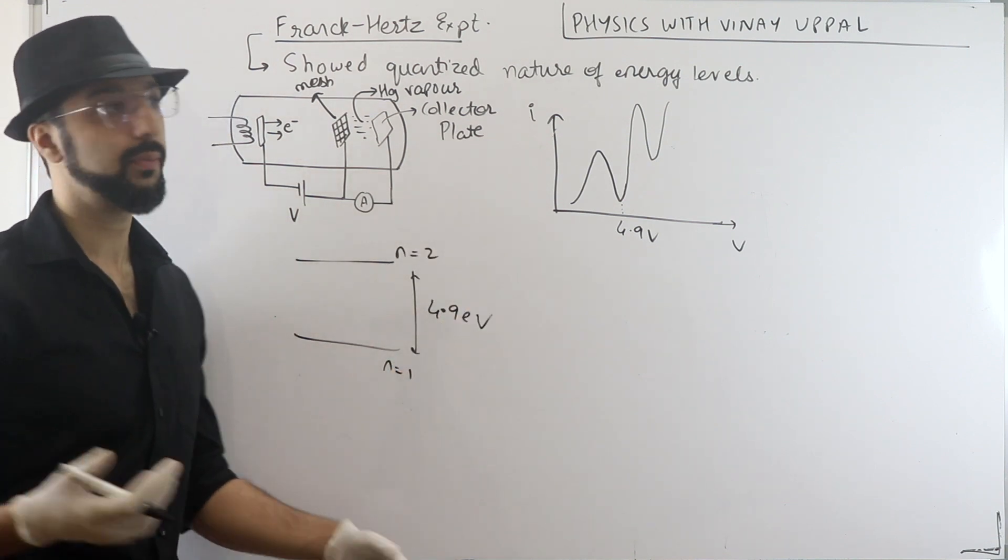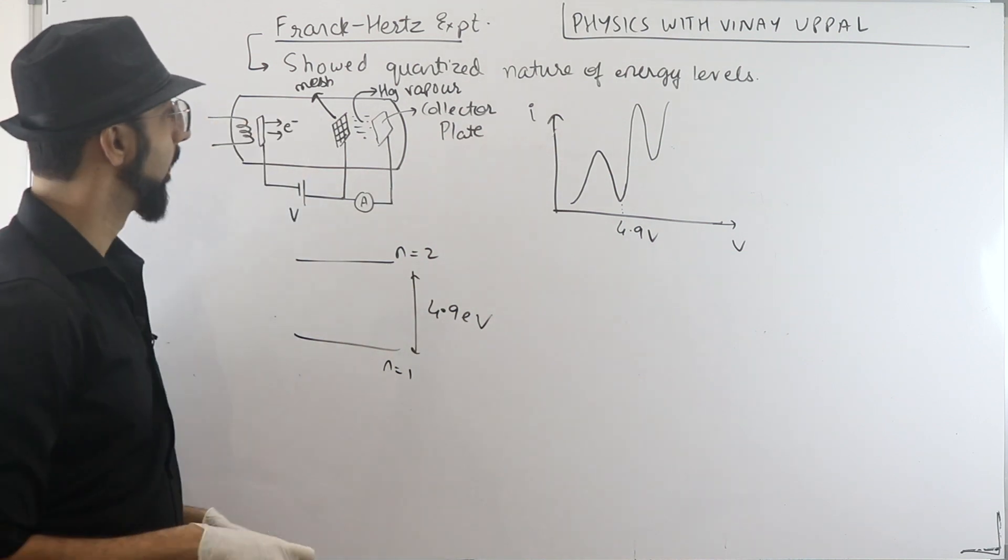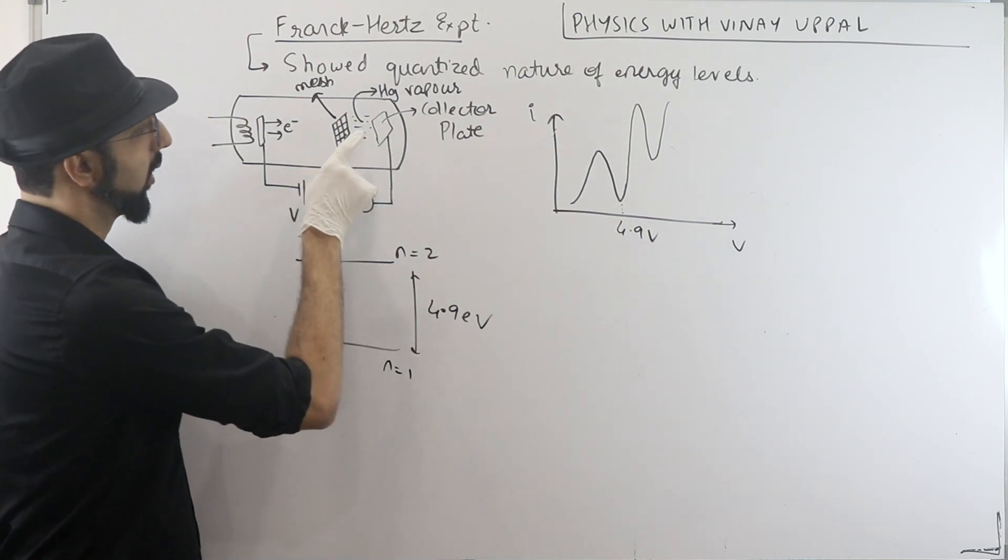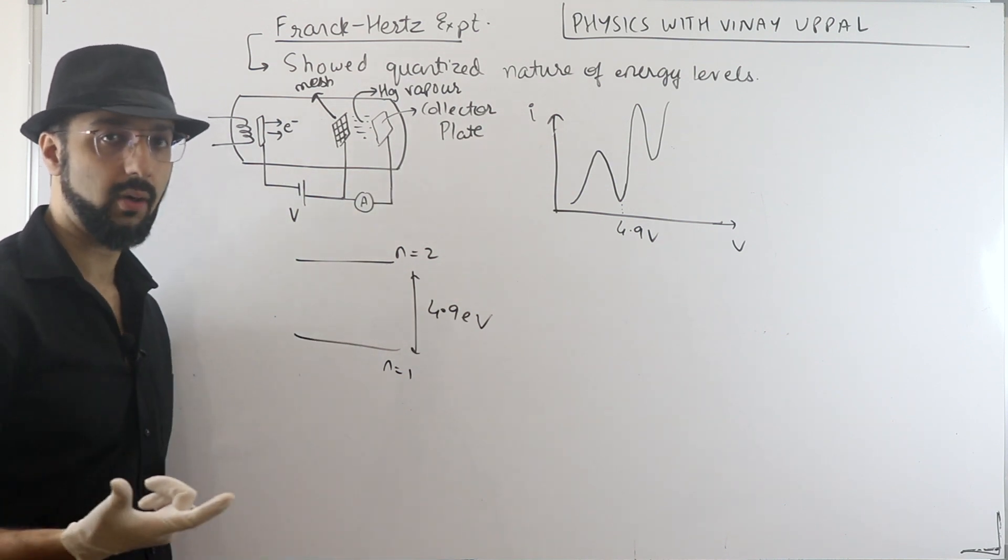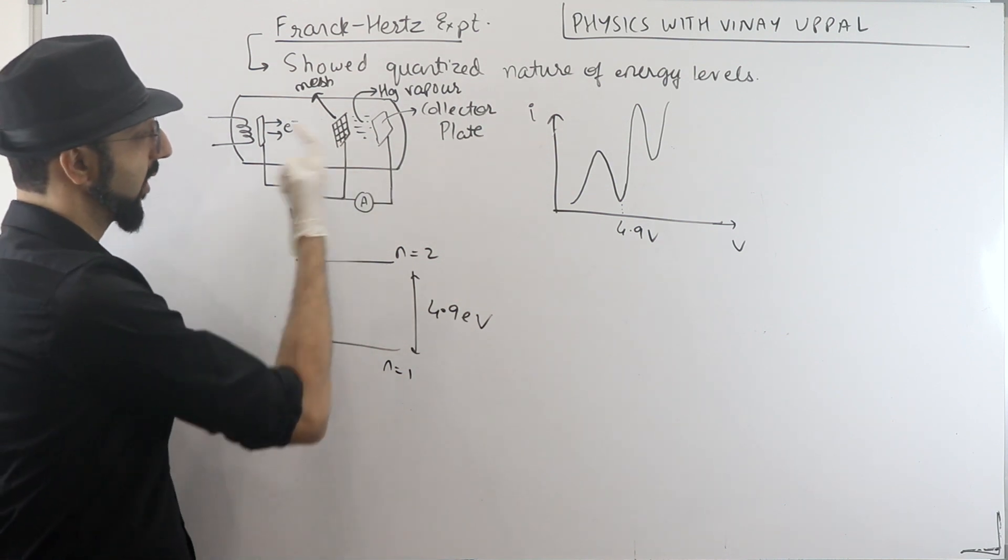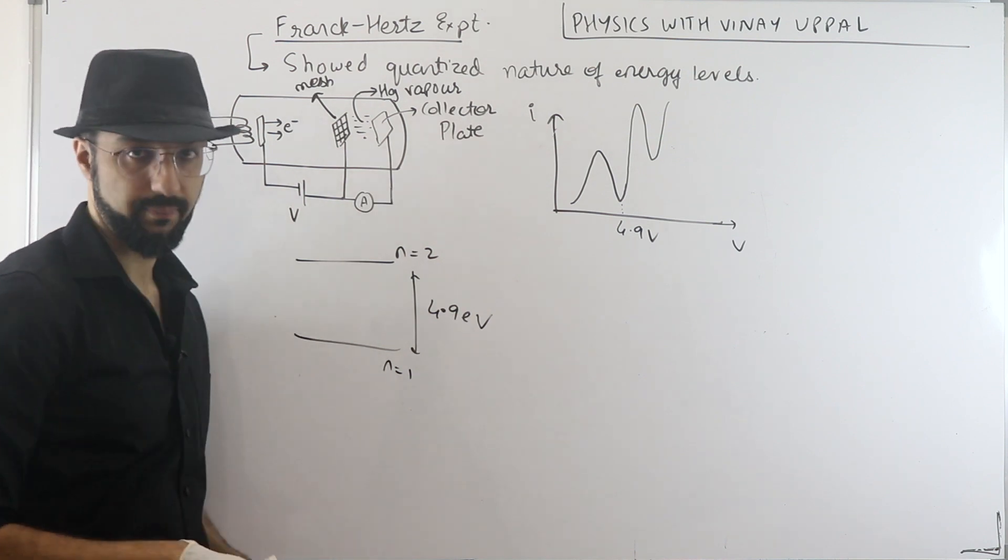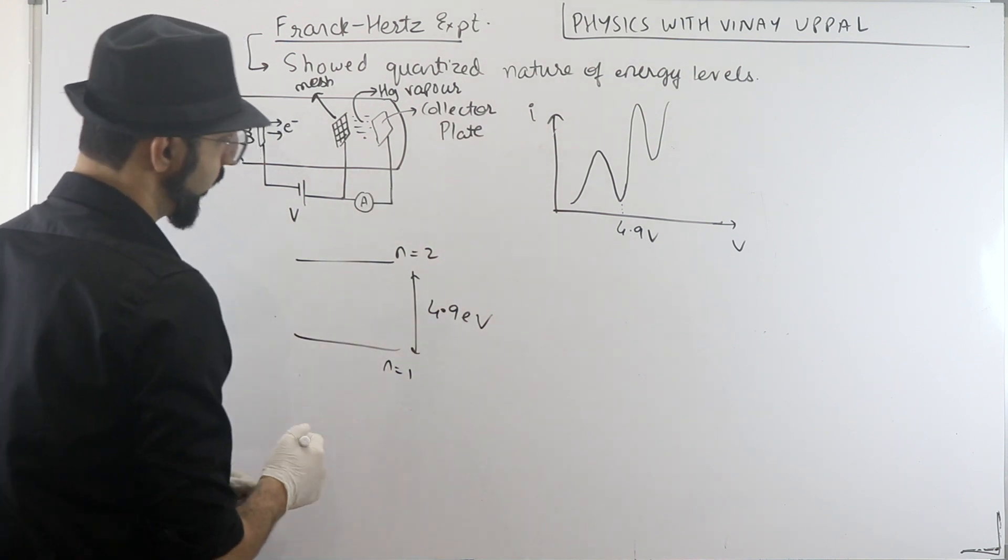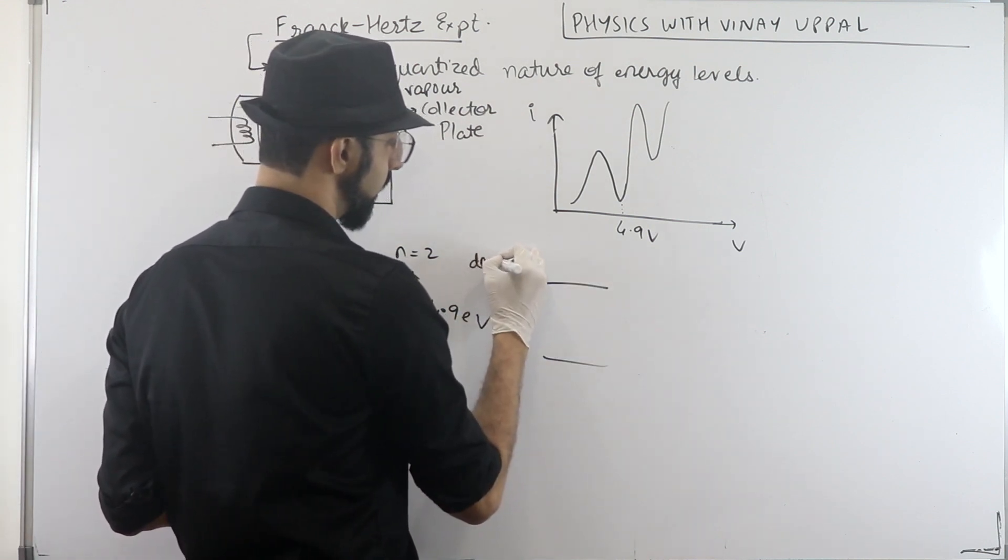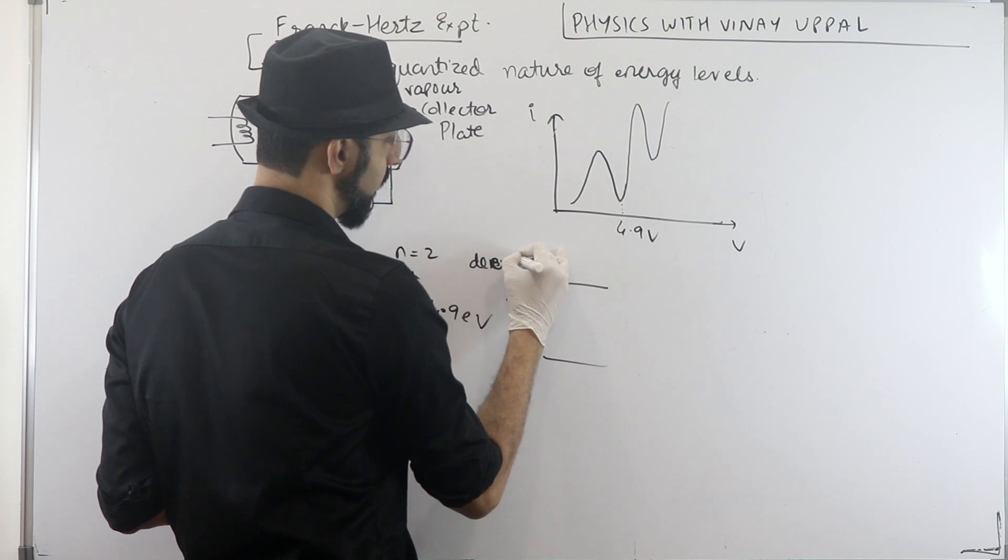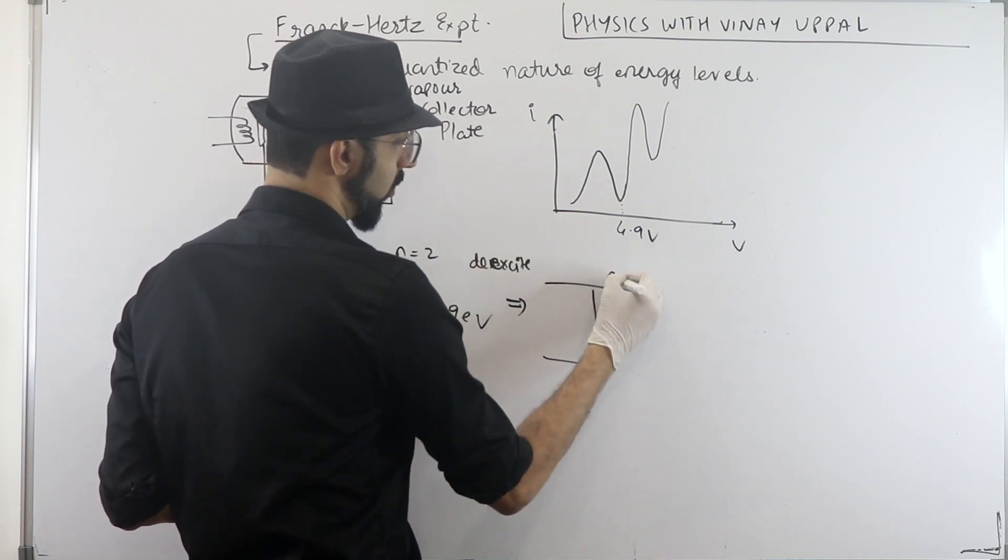So this means that the electrons are able to excite the mercury atom. Those electrons are able to lose their 4.9 electron volt energy and excite the mercury atom from n equal to 1 to n equal to 2 state.